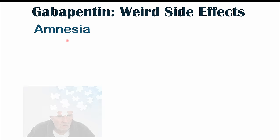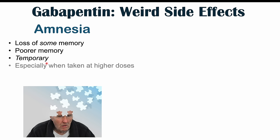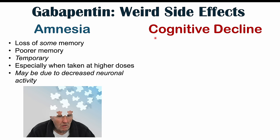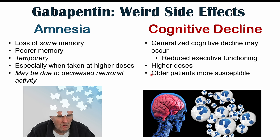Amnesia can also occur — more specifically poor memory or poor memory retention. It can be temporary, with memory improving after stopping the medication, and is especially likely at higher doses due to suppressed neuronal activity. Cognitive decline has also been noted, including reduced executive functioning and reduced attention, particularly at higher doses. Older patients are more susceptible due to metabolism and excretion issues and their general increased risk for cognitive decline.